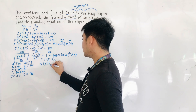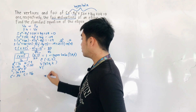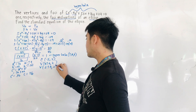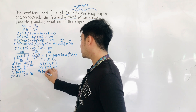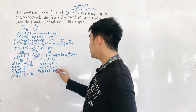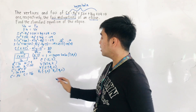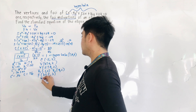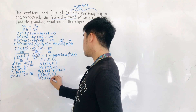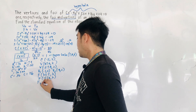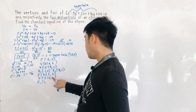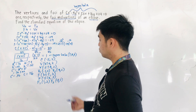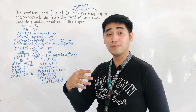For the vertices: h plus or minus a gives negative 5 plus or minus 4, with k equal to 2. So V1 is at (negative 1, 2) and V2 is at (negative 9, 2). For the foci: h plus or minus c gives negative 5 plus or minus 6, with k equal to 2. So F1 is at (1, 2) and F2 is at (negative 11, 2). These are the vertices and foci of the hyperbola.